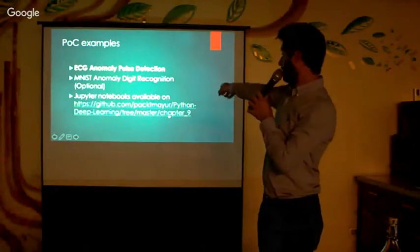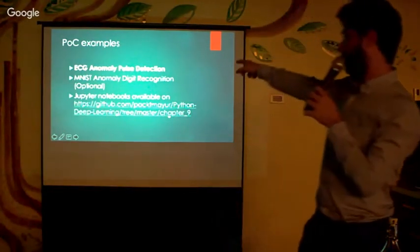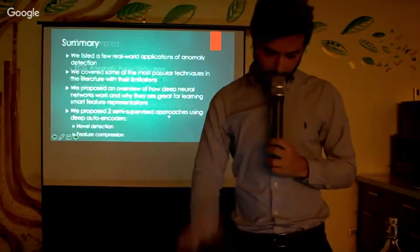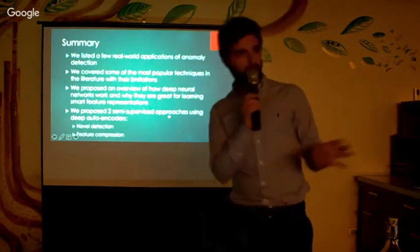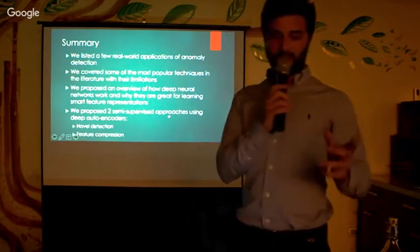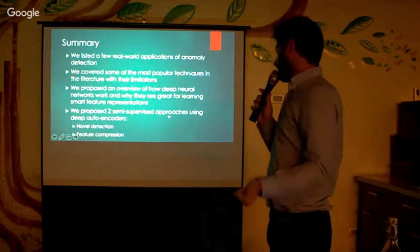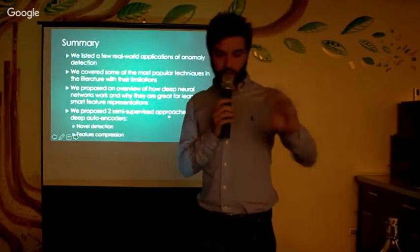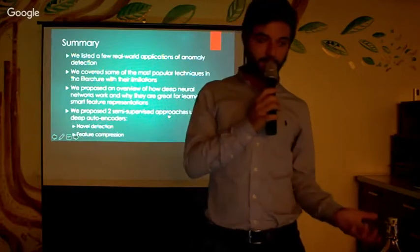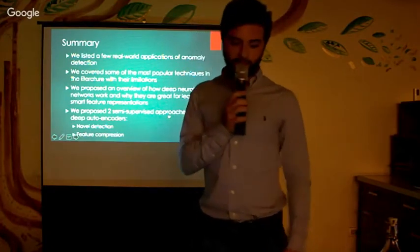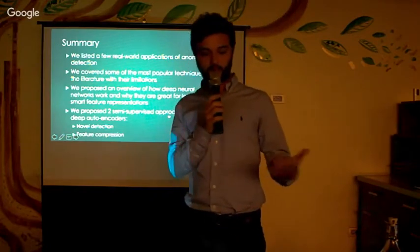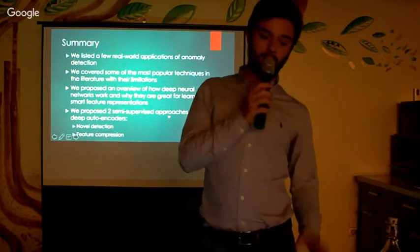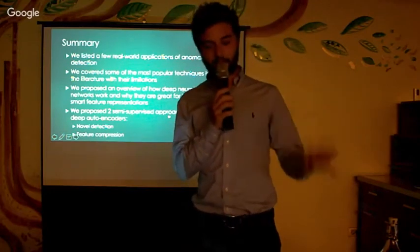To summarize what we've seen in this talk: first, we listed several real-world applications of anomaly detection. Then we covered a few techniques from the literature with their limitations. We then proposed a deep neural network system to address those limitations, in particular two semi-supervised approaches — one based on novelty detection and one based on feature compression.